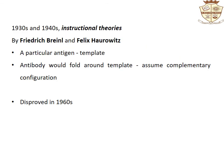In the 1930s and 1940s, the selective theory was challenged by instructional theories proposed by Frederick Breinl and Felix Haurowitz. According to the instructional theories, a particular antigen would serve as a template around which an antibody would fold, and the antibody molecule would assume a complementary configuration. The instructional theories were disproved in the 1960s.